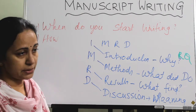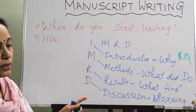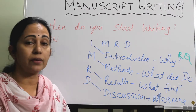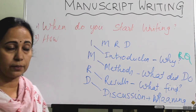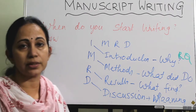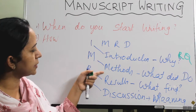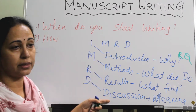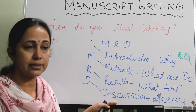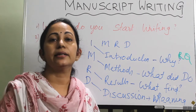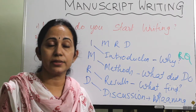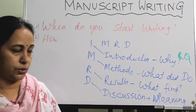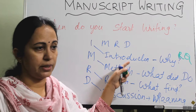The sequence of writing can be changed as you wish. Sometimes it becomes easier when you start with the methods because you have the results with you and you know the methods you used. So you can start with methods and results, then go to the introduction and discussion writing, then state the keywords. Towards the end, after completion of the manuscript, you can start writing the abstract.